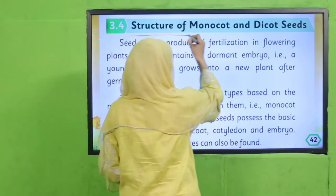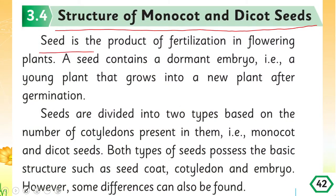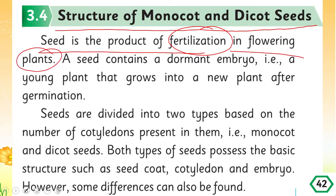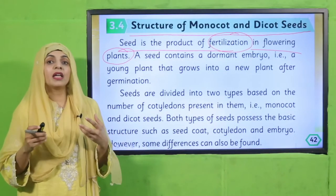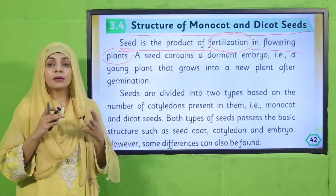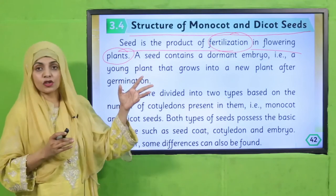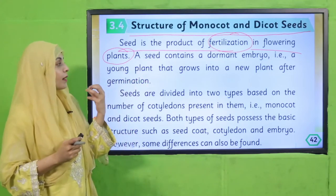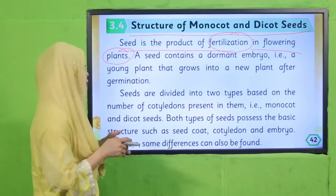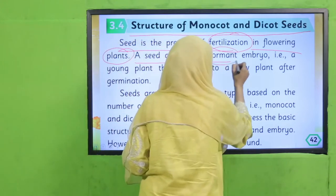Structure of monocot and dicot seeds. A seed is the product of fertilization in flowering plants. When pollen is transferred to the stigma, a tube grows down to the ovary where sperm cells fuse with the egg — this is called fertilization. As a result of fertilization, seeds are formed.